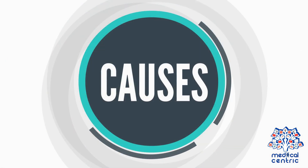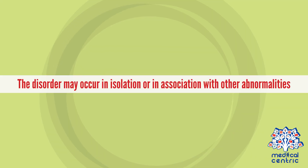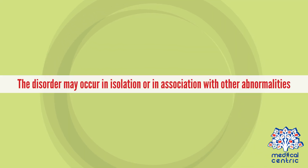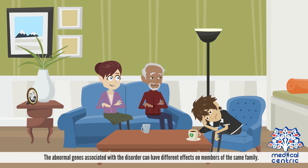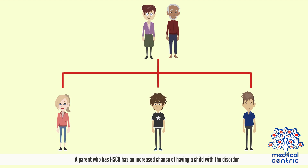Causes: The disorder may occur in isolation or in association with other abnormalities. HSCR that occurs in isolation has been associated with mutations in several different genes. Inheritance of these genes can be dominant or recessive, depending on the gene involved. The abnormal genes associated with the disorder can have different effects on members of the same family. A parent who has HSCR has an increased chance of having a child with the disorder.